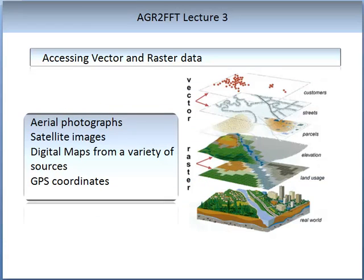As there are advantages and disadvantages of both vector and raster data, it makes sense to use a combination of the two in your map layering. Examples of this data include aerial photographs, satellite images, digital maps from a variety of sources, and GPS coordinates. The image on the right shows a mixed layered map — the first two images are derived from vector data, and the last two images before the real world are sourced from raster data.